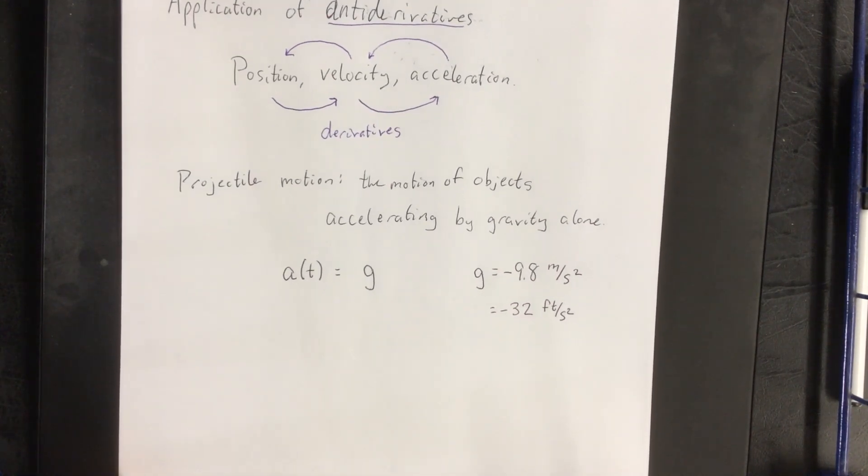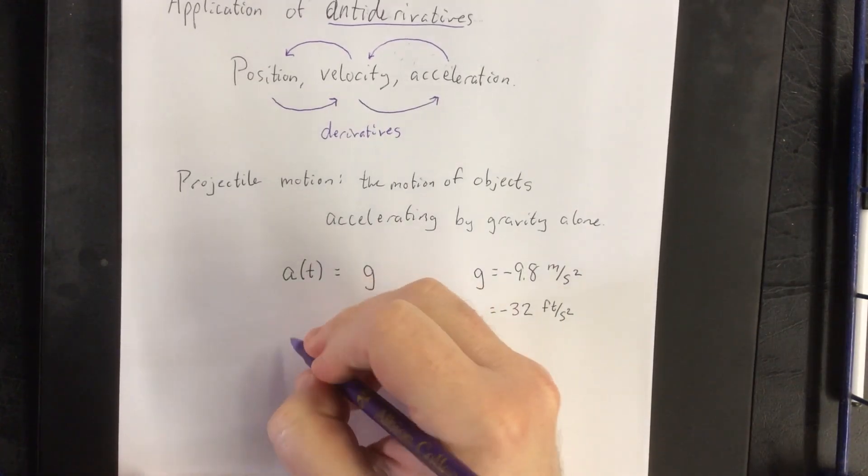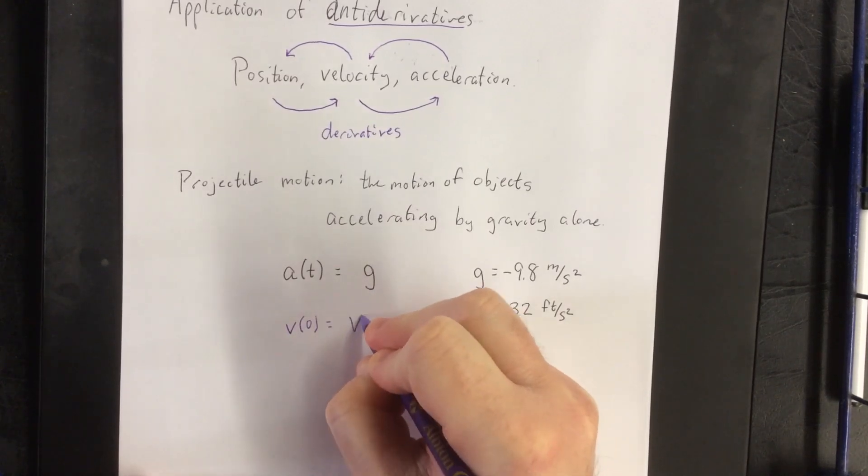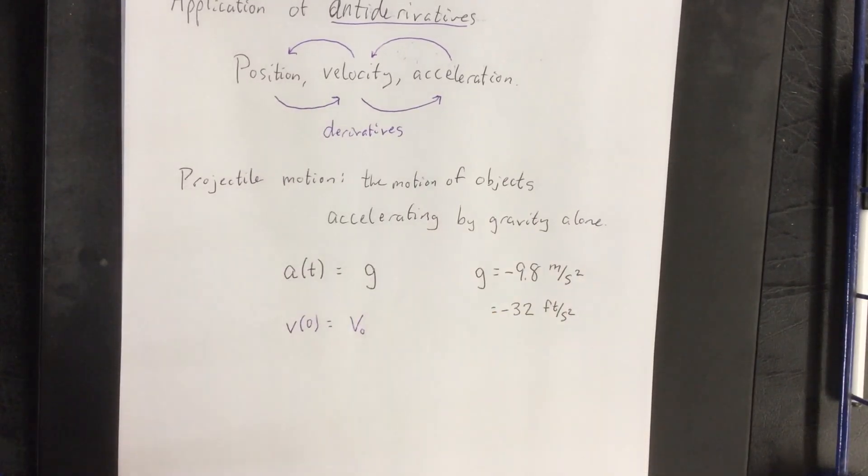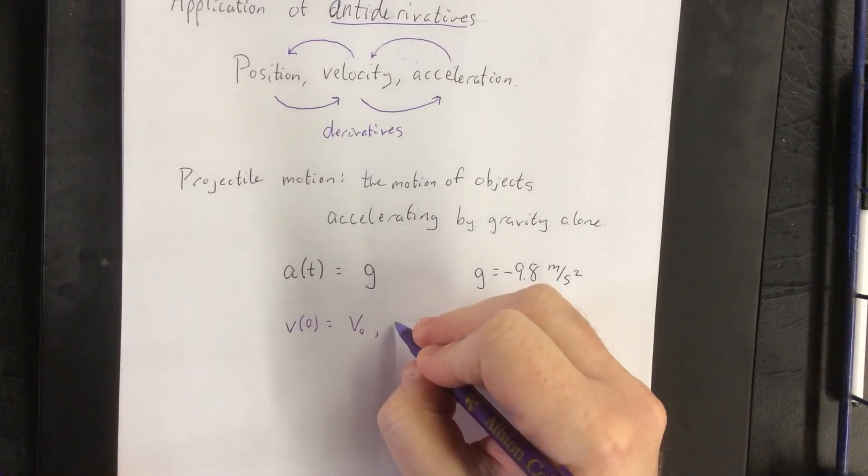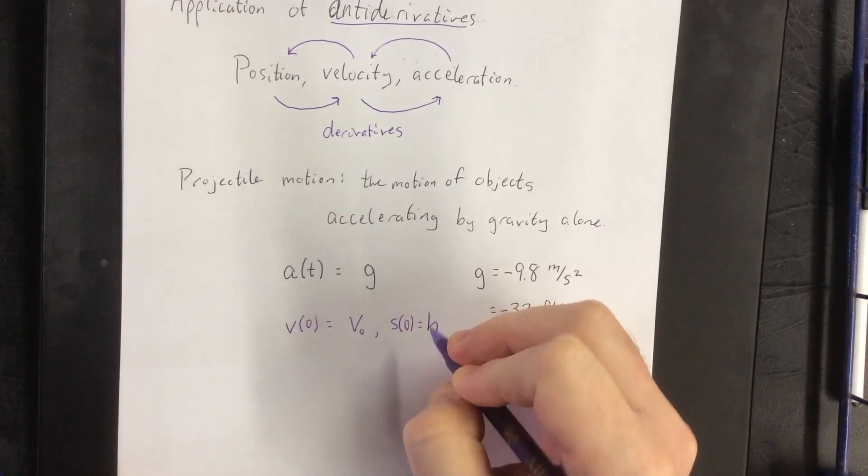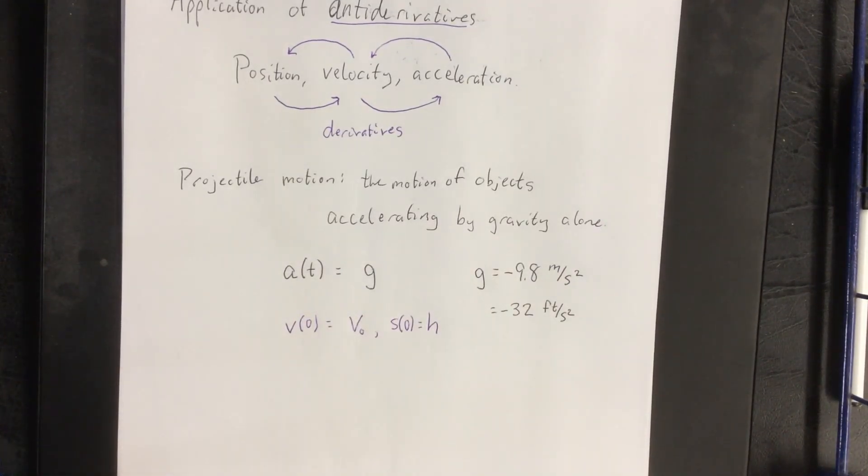Now we're also going to throw on a couple of initial conditions associated with this. We'll throw on the effect that the initial velocity is going to be defined as whatever we define it as. We'll also have the initial position will be associated with whatever height it is off the ground. Now do bear in mind that this is only for acceleration in one direction, and that direction is vertical. This does not take into account horizontal displacement.